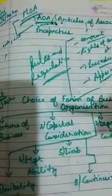Now we can discuss the basic differences between MOA and AOA. First, MOA is meant for external affairs and AOA is meant for internal affairs. Second, MOA contains the objectives of the company and AOA contains the rules and regulations for the company.